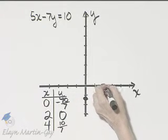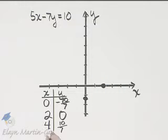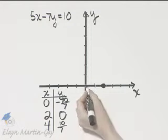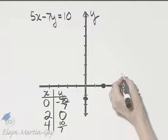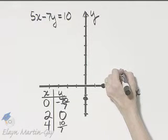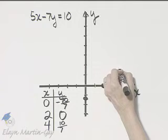Two zero. That's two to the right, zero up or down. Four 10 sevens. Start here, go four to the right, and then 10 sevens up. A little over 1, 1 and 3 sevens.